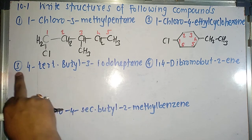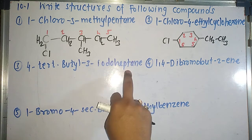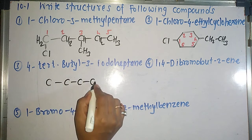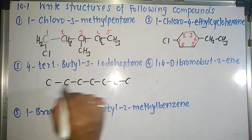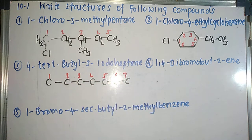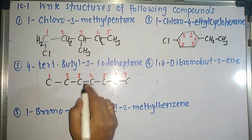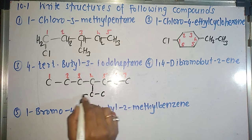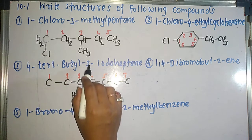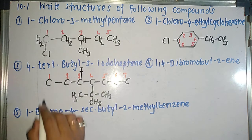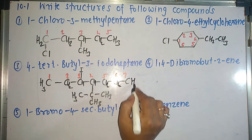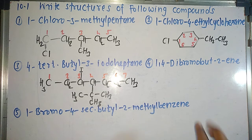So this will be the structure of 1-chloro-4-ethylcyclohexane. Now here I'm having 4-tert-butyl-3-iodoheptane. Heptane means 7 carbon atoms, so I will draw 7 carbon atoms: 1, 2, 3, 4, 5, 6, 7. At position 4 I'm having tert-butyl group, and at position 3 I'm having iodine. The rest are hydrogens: CH₃, CH₂, CH, CH, CH₂, CH₂, CH₃.